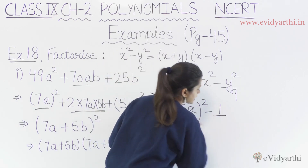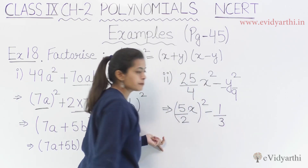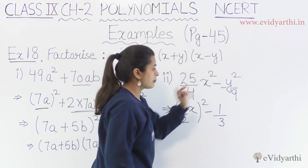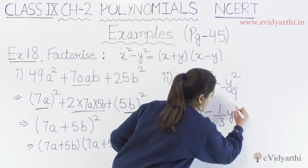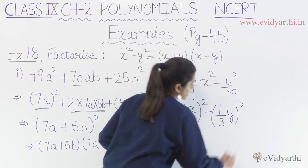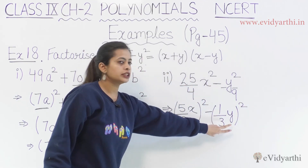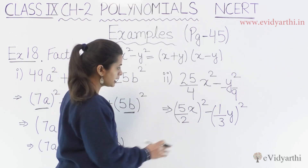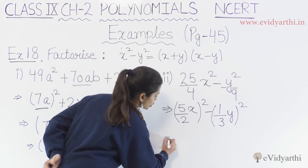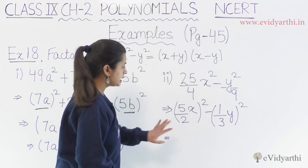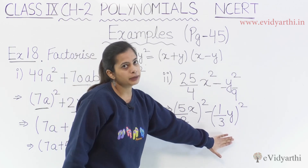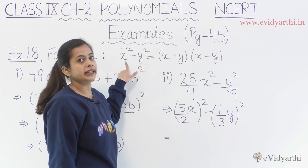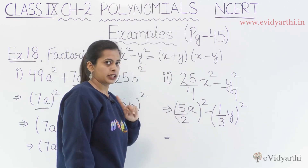The second term is 1 by 3 times y, or you can say y by 3. You can clearly see this is the a² minus b² formula, or if you want to say, the x² minus y² formula.